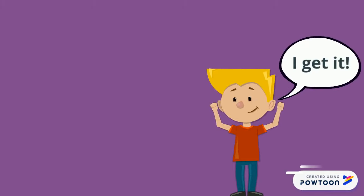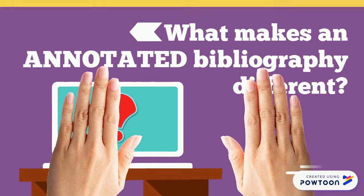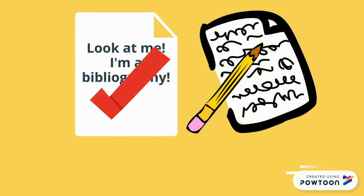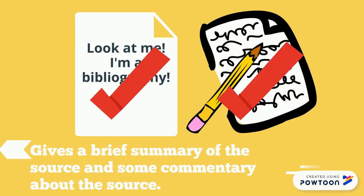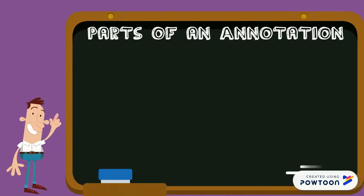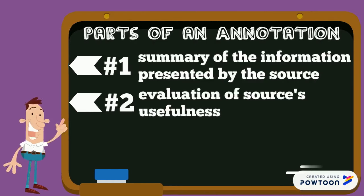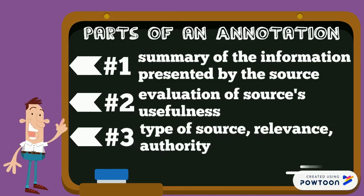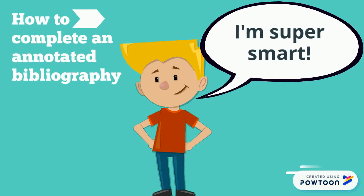So you get it — a bibliography is important for research. But what makes an annotated bibliography different? Well, it includes the bibliography part of course, but it also includes an annotation for each source. The purpose of the annotation is to give a brief summary of the source and some commentary about it. Each annotation has three key elements: number one, a summary of the information presented by the source; number two, an evaluation of the source's usefulness in answering your research question or questions; and number three, an explanation of the type of source, including its relevance and authority.